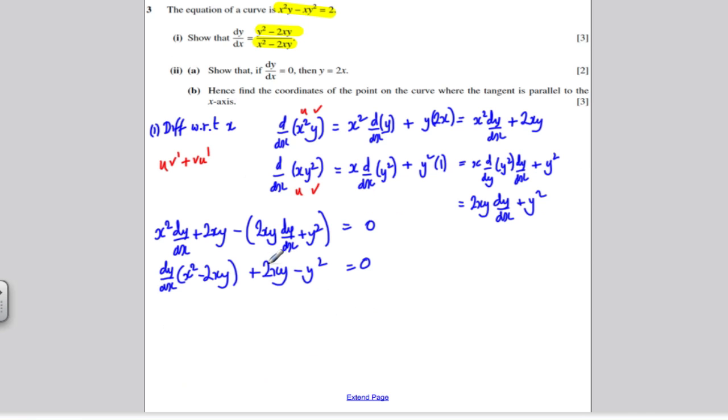Tidying up now, adding y squared to both sides and subtracting 2xy from both sides, I get dy by dx times x squared minus 2xy equals y squared minus 2xy. And dividing by x squared minus 2xy, I get, as required, dy by dx is y squared minus 2xy, all divided by x squared minus 2xy. We're done. We have shown part 1 as required for our three marks.